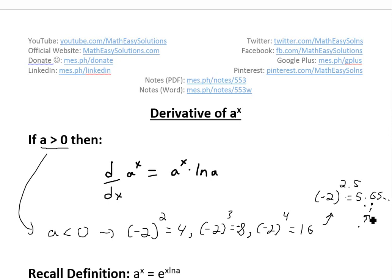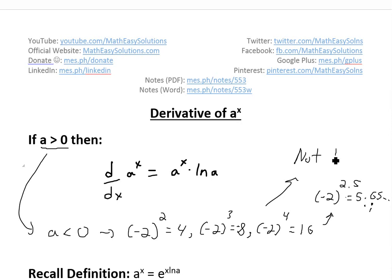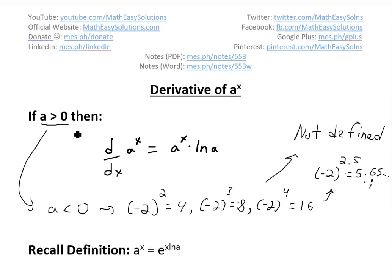So when a is less than 0, we can't have a function defined for a to the power of x, because the values jump positive, negative, and in between there are all these imaginary numbers, so it's not defined. All these cases are not defined, so this general exponential function a to the power of x is only valid when a is greater than 0.